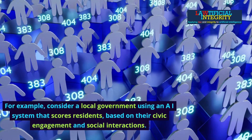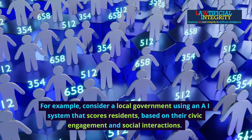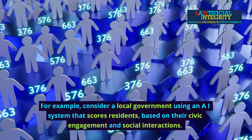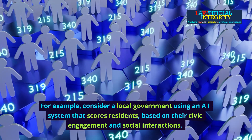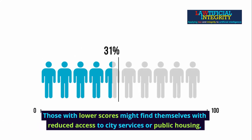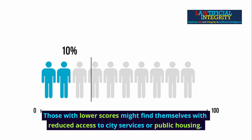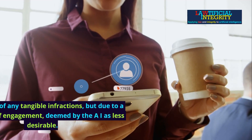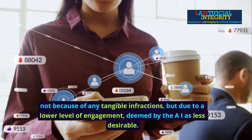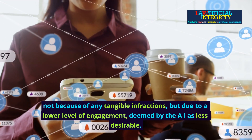For example, consider a local government using an AI system that scores residents based on their civic engagement and social interactions. Those with lower scores might find themselves with reduced access to city services or public housing, not because of any tangible infractions, but due to a level of engagement the AI deems less desirable.